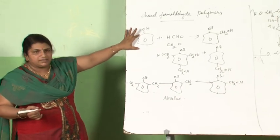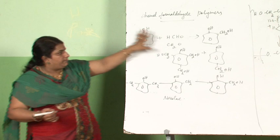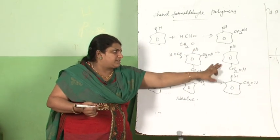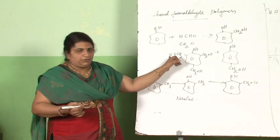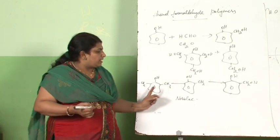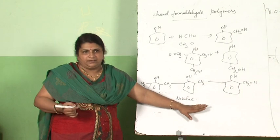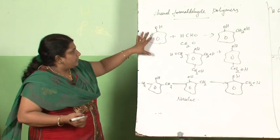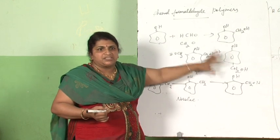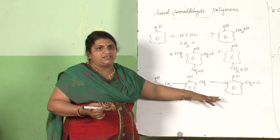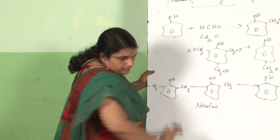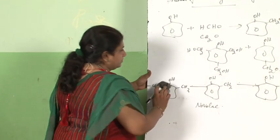In summary: phenol combined with formaldehyde gives ortho-hydroxybenzyl alcohol, para-hydroxybenzyl alcohol, and the 2,4,6 product. If only the ortho product combines, you get Novolac. If both the ortho and para products combine together, you get a network structure, which is called Bakelite.